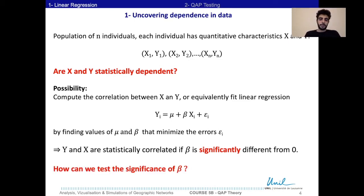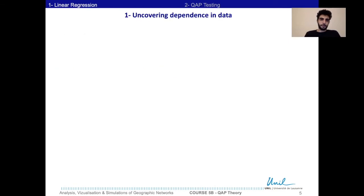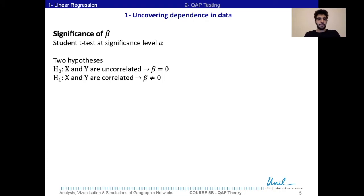How can we test the significance of β? Usually, we compute the t-test at a certain significance level α. This t-test has two hypotheses: X and Y are either uncorrelated, so β equals 0 (the null hypothesis), or the alternative hypothesis is that X and Y are correlated, and β is different from 0.